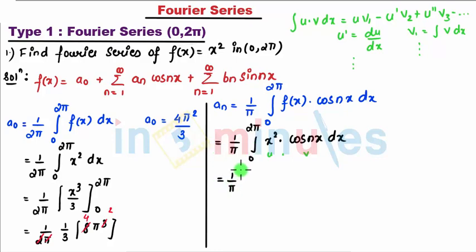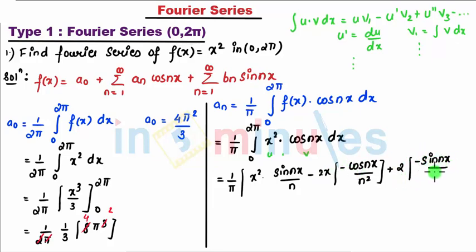That comes to 1 upon π: x² cos(nx) becomes sin(nx) divided by n, minus differentiation of x² is 2x, integration of sine becomes minus cos(nx) divided by n². Then plus, differentiation of 2x becomes 2, and integration of minus cos(nx) becomes minus sin(nx) divided by n³.